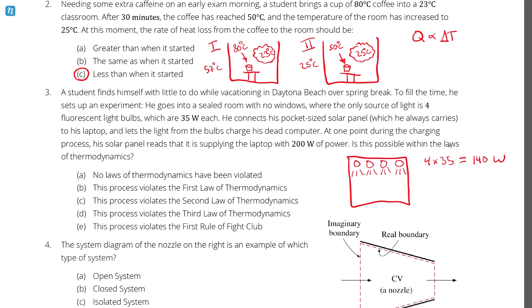So here, if I'm getting 200 watts of power from the solar panels, that solar panel would have to create energy in order to supply the laptop with 200 watts. And because it's impossible to create or destroy energy, we know that this process violates the first law of thermodynamics. The only exception to this would be if the solar panel pack had rechargeable batteries or something, and the extra power was coming from that battery pack. But that's outside the scope of this question.